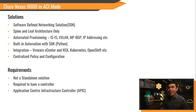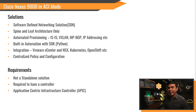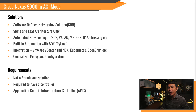Here is the other mode: Application-Centric Infrastructure, or ACI mode. It's only available in Cisco Nexus 9K. This is the Software-Defined Networking (SDN) solution of Cisco, and it only works with Spine and Leaf architecture.